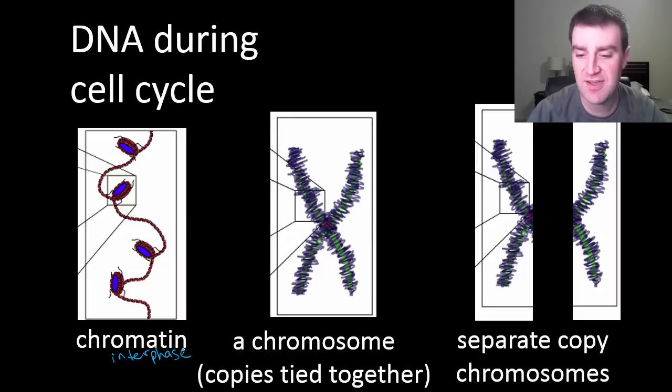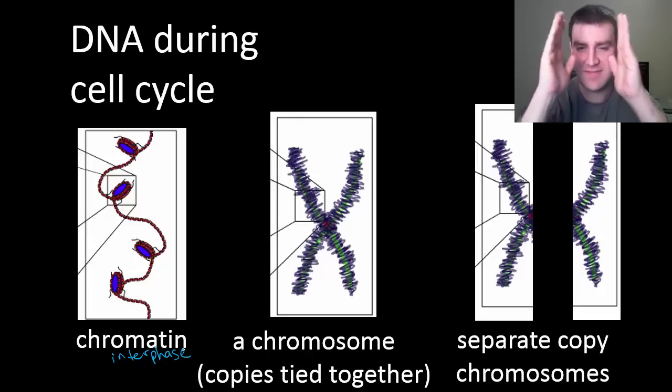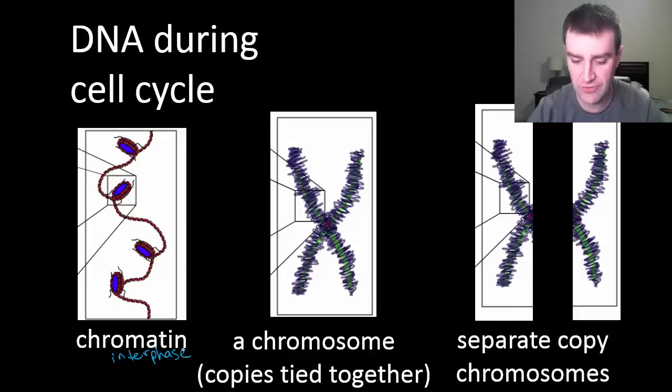And there are kind of two different ways to think about chromosomes. Sometimes they look like they're in an X shape and sometimes they look like they're kind of in linear rods, like over here kind of like a straight line.